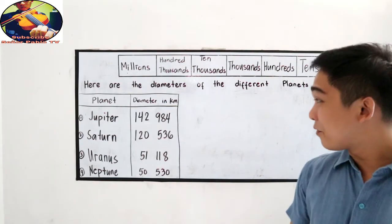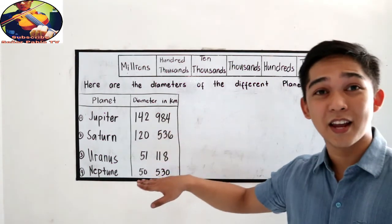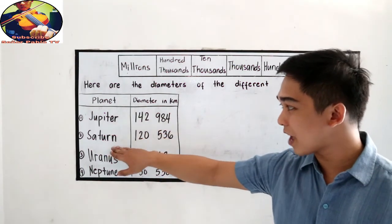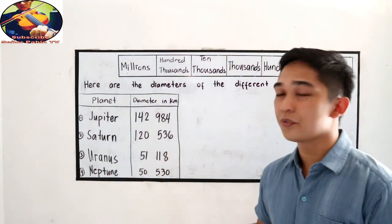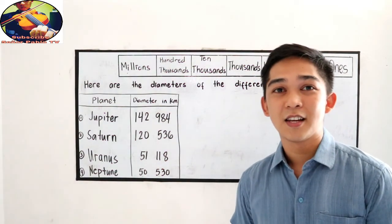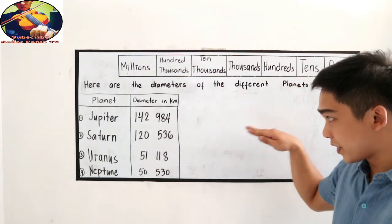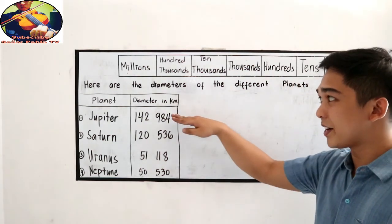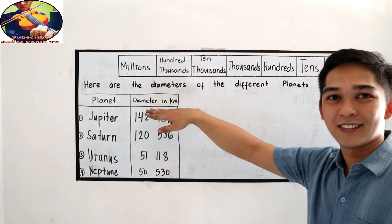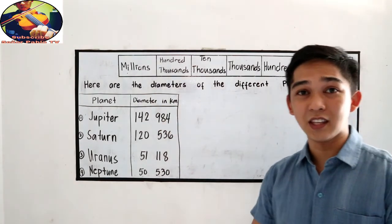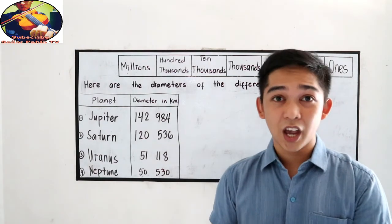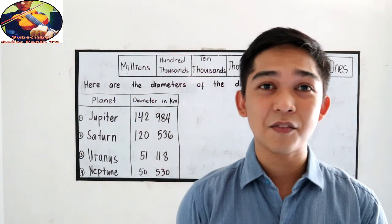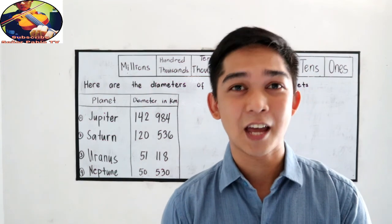And now, I have here the next four planets: Jupiter, Saturn, Uranus, and Neptune, and their length of diameter. Now I want you to write in words their diameter. And after writing, please let your mom and dad check your work and answer all the activities in your module or in your handbook.